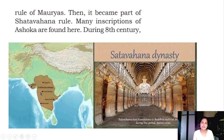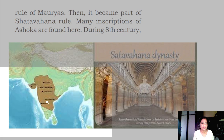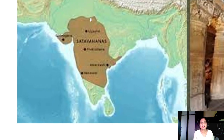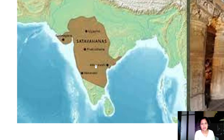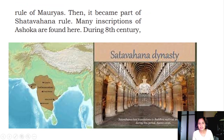After the rule of the Mauryas, this area became part of the Shatavahana rule. This North Karnataka was almost entirely under the Shatavahanas. Their empire map shows the Shatavahana dynasty, and many inscriptions of Ashoka were also found here in this region.